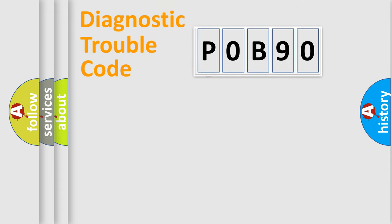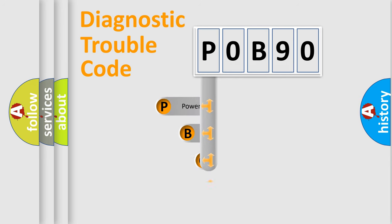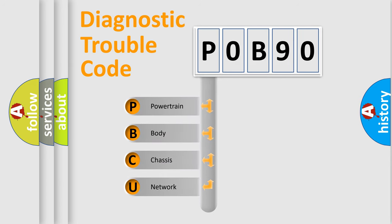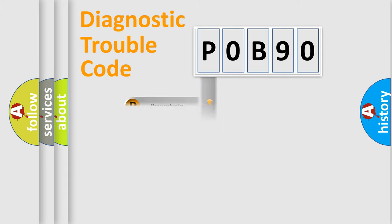Let's look at the history of diagnostic fault code composition according to the OBD2 protocol, which is unified for all automakers since 2000. We divide the electric system of the automobile into four basic units: Powertrain, Body, Chassis, and Network. This distribution is defined in the first character of the code.